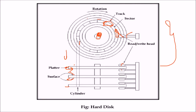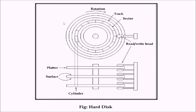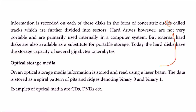Information recorded on each disk is in the form of concentric circles called tracks, with sectors inside them — sectors are where the actual data is stored. Hard disks can be internal or external, portable, with very large storage capacity in gigabytes and terabytes.